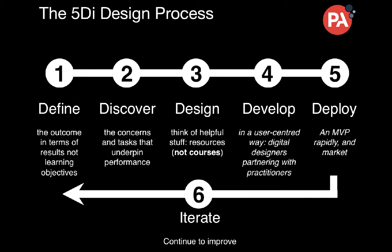Here's the process: 5DI — define, discover, design, develop, deploy, and iterate. You start by defining the outcome in terms of results, not learning objectives. Learning objectives don't really have much to do with results — you can learn something but not actually apply it. And equally, you can change your behavior without learning things; just look at fitness apps and trackers. So define the outcome in terms of the results you want to achieve.